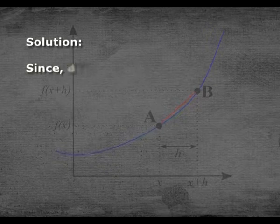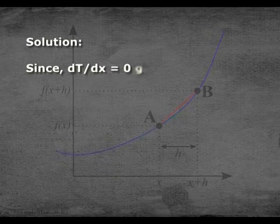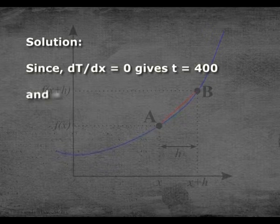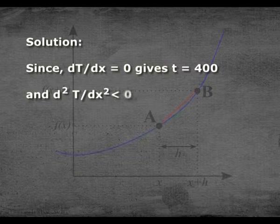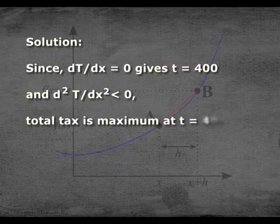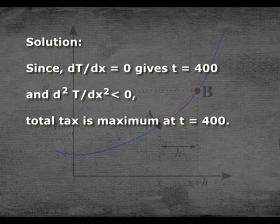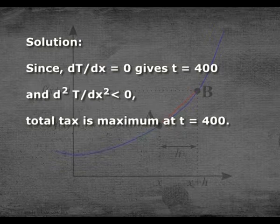Since dT/dt = 0 gives t = 400 and d²T/dt² is less than 0, the total tax is maximum at t = 400.